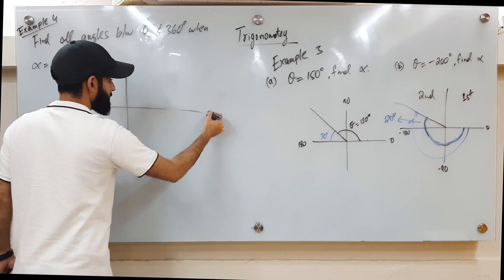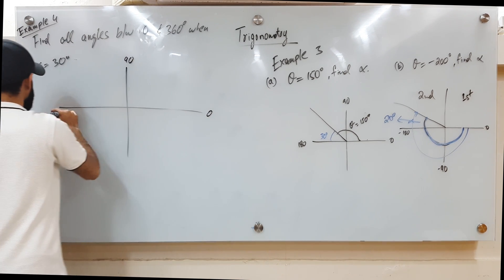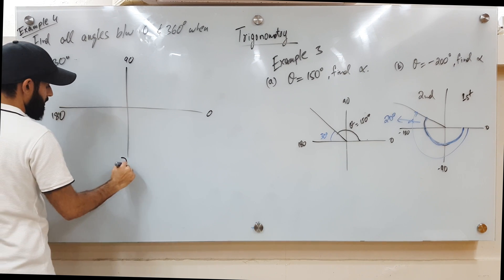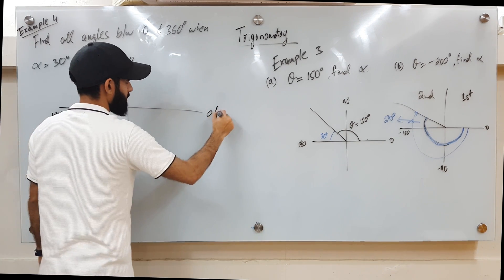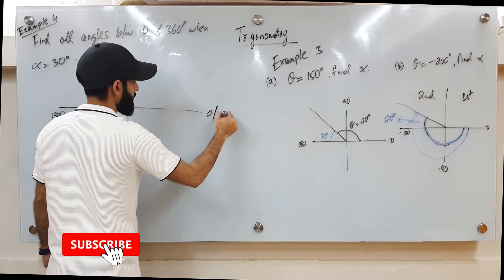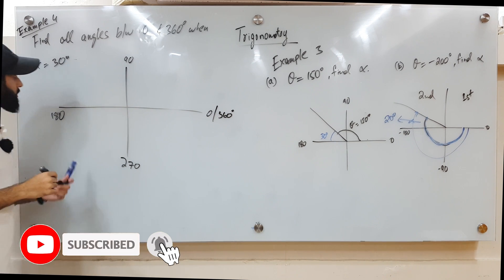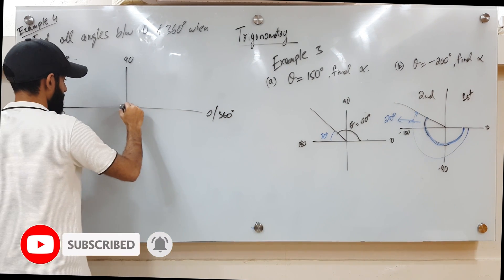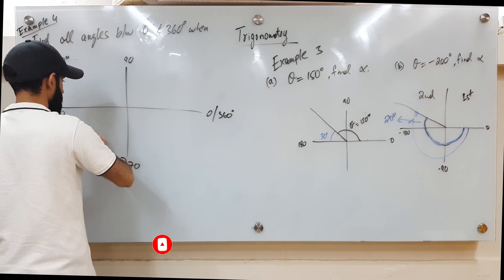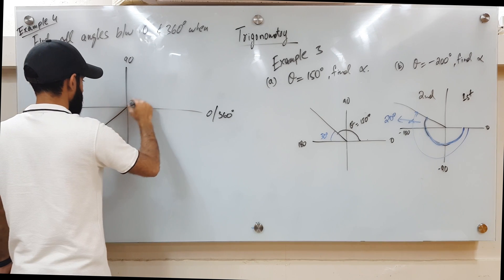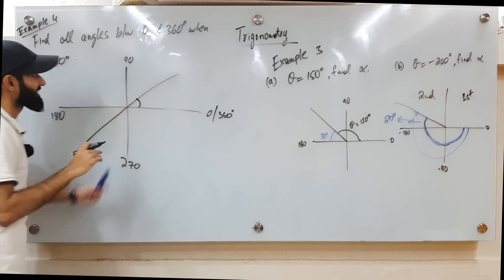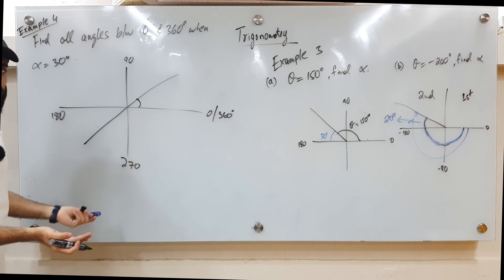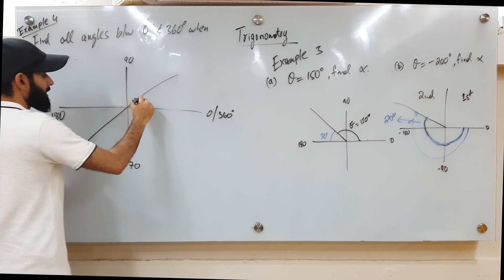So we're going to start from 0, 90, 180, 270, and then 360 degrees. Since alpha equals 30 degrees and we don't know what quadrant we're talking about, we'll have to take all four quadrants into consideration, since the range of 0 to 360 means all four quadrants are active.